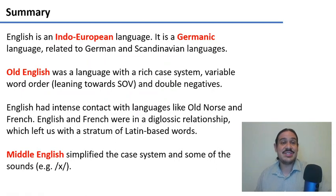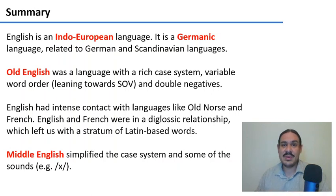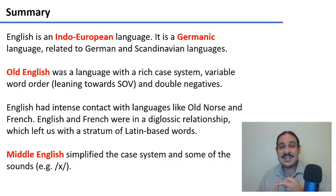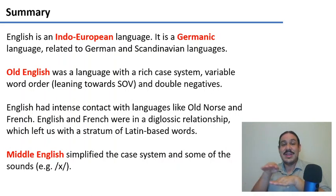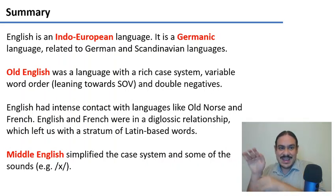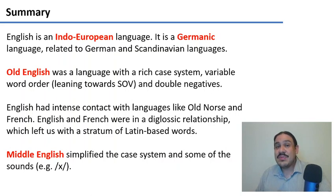In summary: English is an Indo-European language in the Germanic branch, related to German and Scandinavian languages. Old English was very different from modern English — it had a rich case system, variable word order, and double negatives. English had intense contact with Old Norse and French, giving us a lasting distinction between formal Latin-derived words and common English ones. Middle English, spoken around the 1300s, simplified the case system and lost sounds like the 'gh' in 'kniht.'